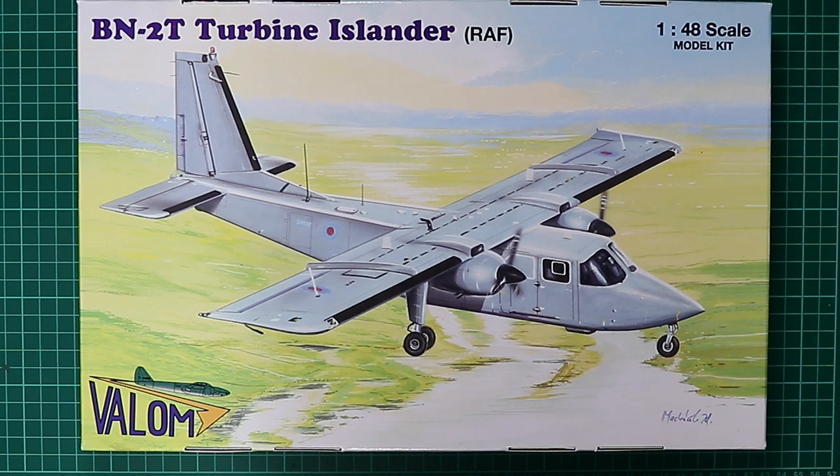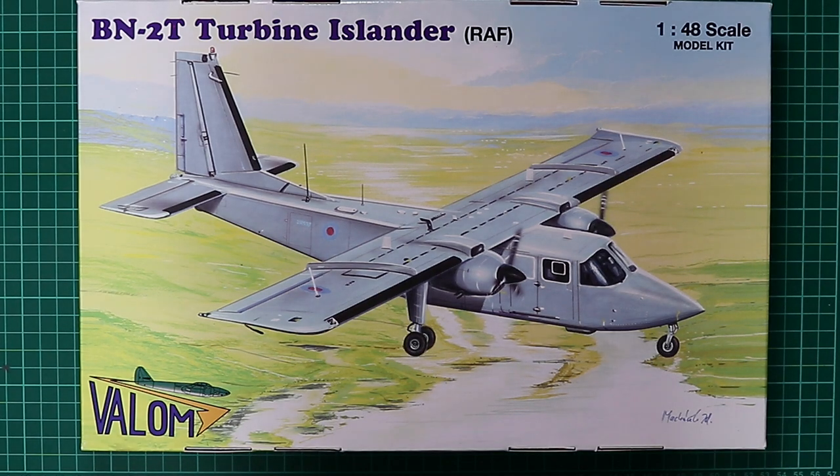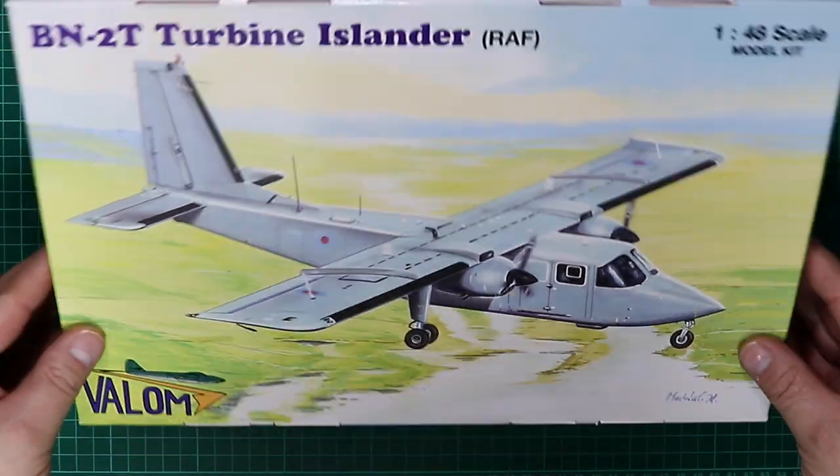Around the box top tour, there's some delightful artwork on the box top depicting an Islander, probably over Northern Ireland somewhere. Having a look around the box, we've got multilingual blurb just saying the construction kit contains a complete plastic model, resin parts, photo etch parts, decal sheet, instruction book. Glue and paint are not included.